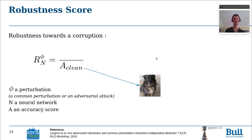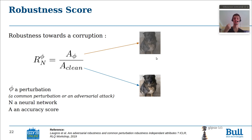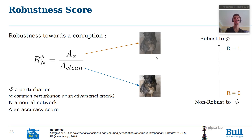This metric consists in, for a neural network N tested on a perturbation phi, measuring the accuracy of the considered neural network on a clean validation set, and then measuring the accuracy of the same neural network on the same validation set but this time corrupted with the phi corruption. The more the robustness score is close to 1, the more the neural network can be considered as robust to the considered corruption, and the more it is close to 0, the less it is robust to it.